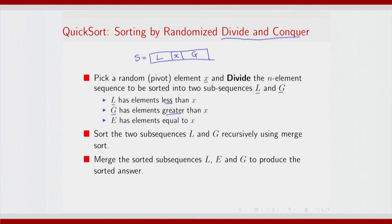Now, optionally if there are multiple elements equal to x, you might identify a band here which comprises more than one element, and you call it e. For the rest of this discussion we will assume that e has a single element, because whatever we discuss for a single element also holds for multiple elements.